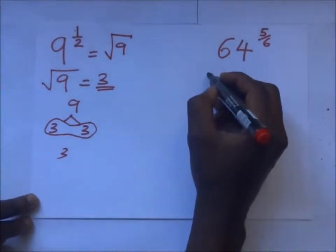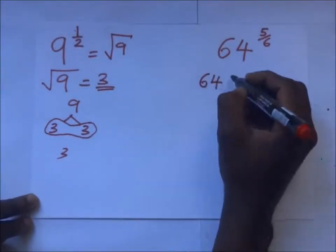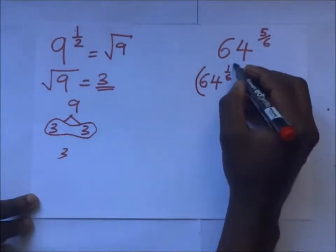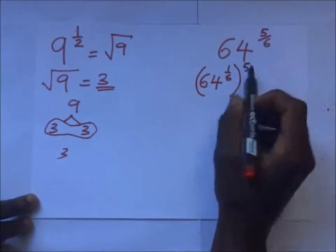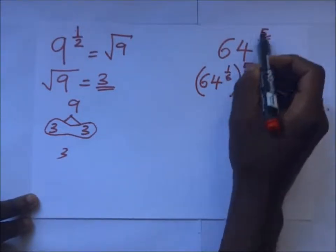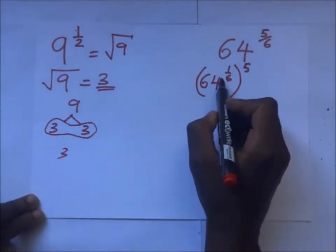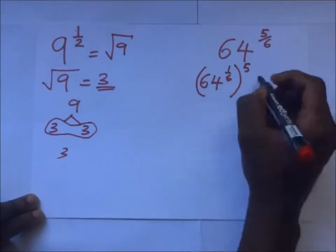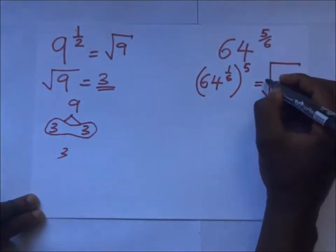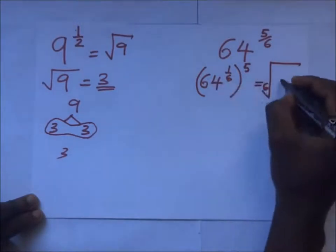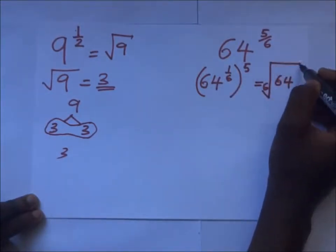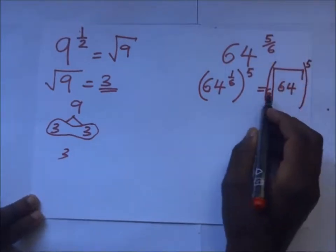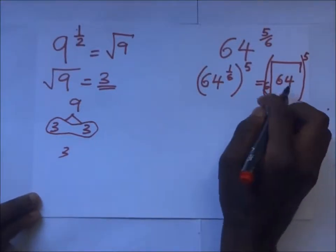Now, 64 to the power 5 over 6 is the same as 64 to the power 1 over 6, and this is to the power 5, because 5 times 1 over 6 is 5 over 6. So you first deal with 64 to the power 1 over 6 — that is, the sixth root of 64 — and all this is to the power 5.